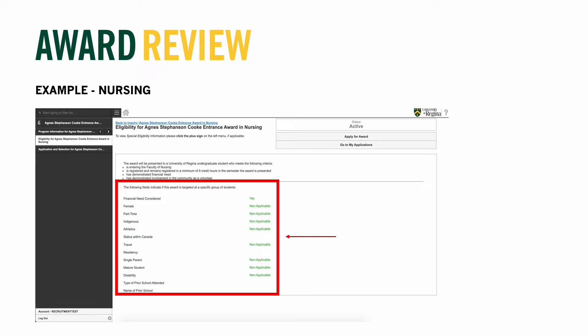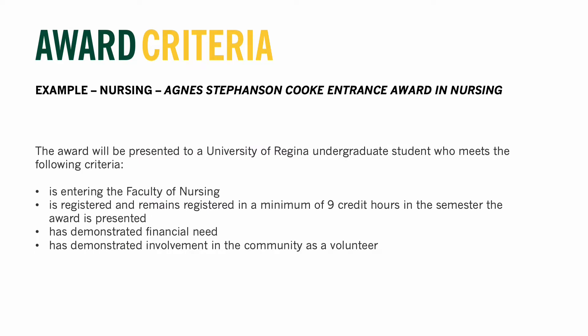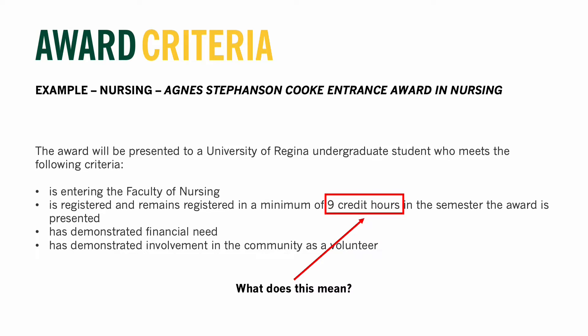This could include students that illustrate financial need, self-identify as female or indigenous, or are single parents, mature students, or have accessibility needs; are planning to study part-time; participate in athletics; have a specific status within Canada; have a specific residency; will graduate from a specific school or region; and more. Let's go through the criteria for the Agnes Stevenson Cook Entrance Award in Nursing. This award is for students entering the faculty of nursing who register and remain registered in a minimum of nine credit hours in the semester the award is presented in. Usually at this point students look at me with panic because they haven't selected courses yet — this is completely okay. Course registration will not happen for first-year students until the end of April, so please do not panic. Having a notepad or word document handy to record award requirements will be helpful.